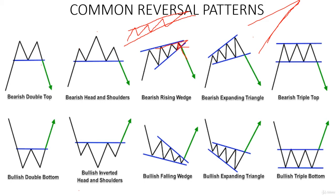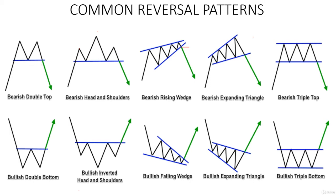Unlike the rising wedge which was getting smaller, the expanding triangle is getting bigger. The trend starts at a point and begins making higher highs and higher lows that keep expanding outward. This is the opposite of the bearish rising wedge. Once you notice a breakout, follow the direction of the breakout — that's what all of these patterns are fundamentally about.